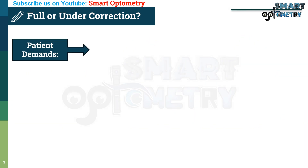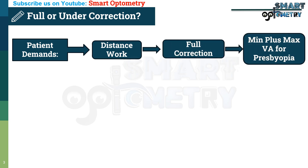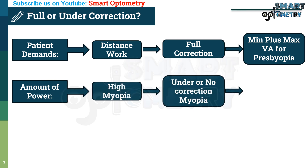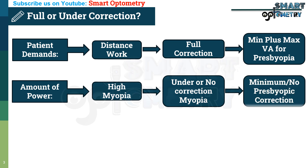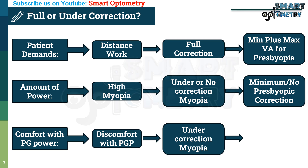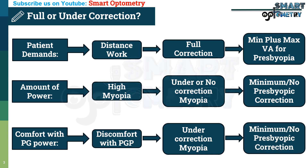Patient's demand: if the patient's main concern is distance work, then we must give full correction for myopia and the required presbyopic power. Amount of power: if the patient has a high degree of myopia, we can go with under-correction of myopia and minimum or no correction of presbyopia. Comfort level with previous glass: if the patient is not comfortable with a previous bifocal or progressive, then we can follow under-correction of myopia and minimum correction for presbyopia in bifocal or progressive, or no near correction at all using single vision glass.